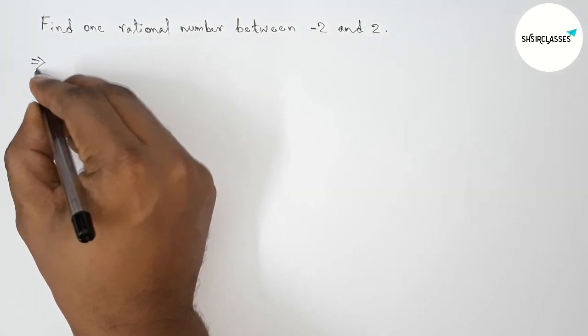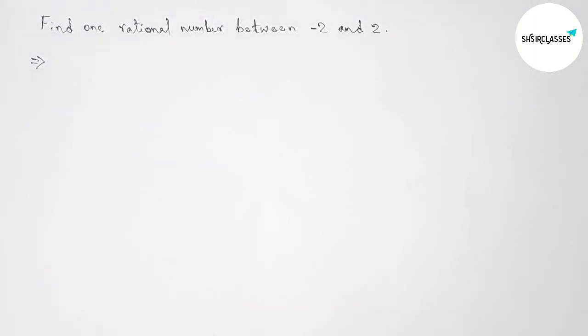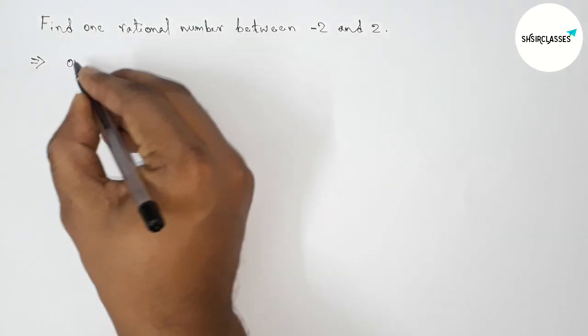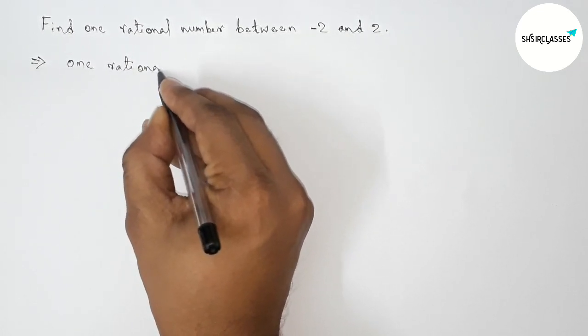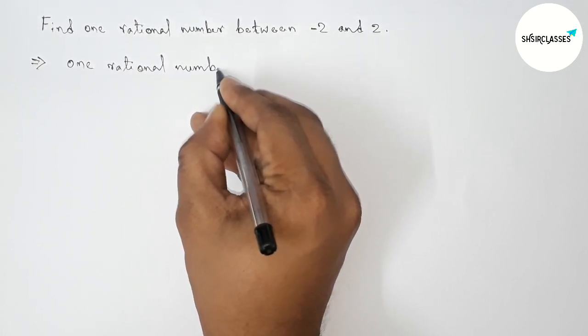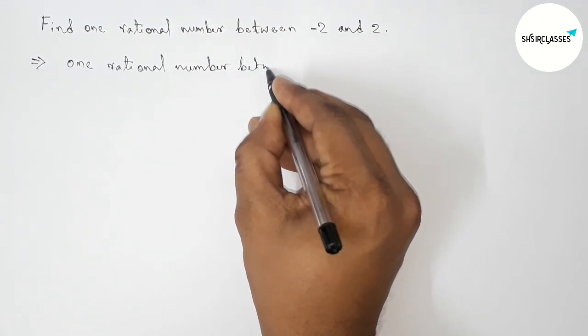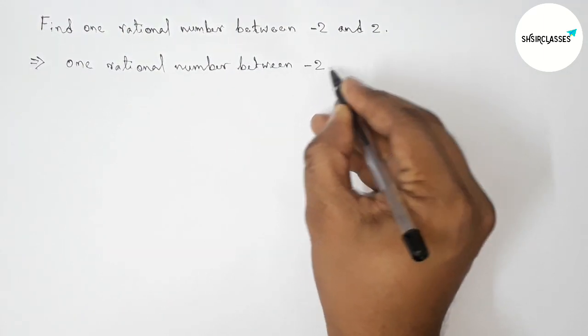First of all, let us solve this problem. Here between -2 and 2, we have to find only one rational number, but we can get many rational numbers between -2 and 2. So now, one rational number between